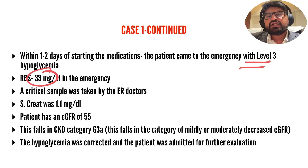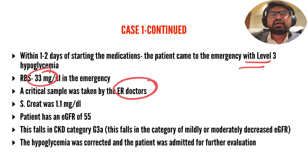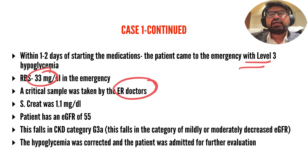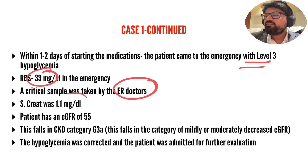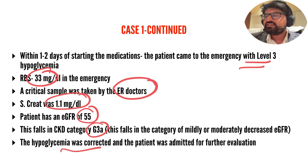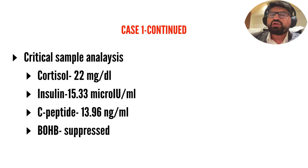Her glucose in the emergency was 33 mg/dL. An important teaching point: whenever a patient comes with hypoglycemia, take a critical sample immediately. The creatinine at that time was 1.1 with eGFR of 55, placing her in CKD category G3a. The hypoglycemia was corrected in the emergency and the patient was admitted for further evaluation. The endocrinologist saw the patient the next morning with the critical sample already available.